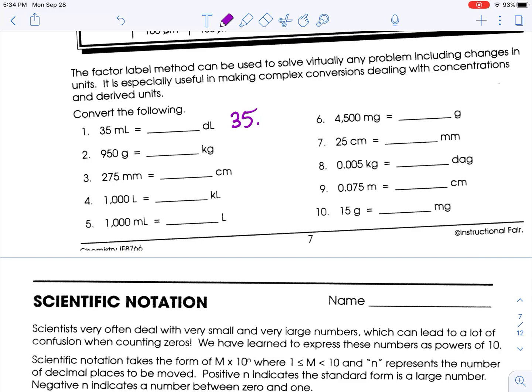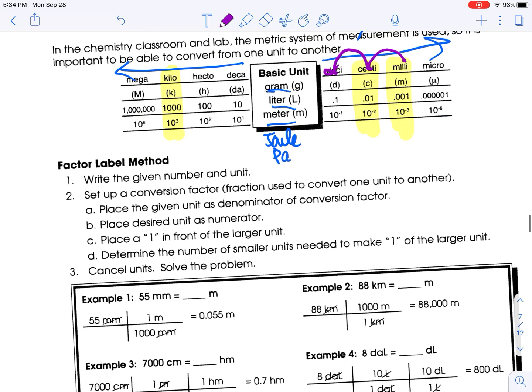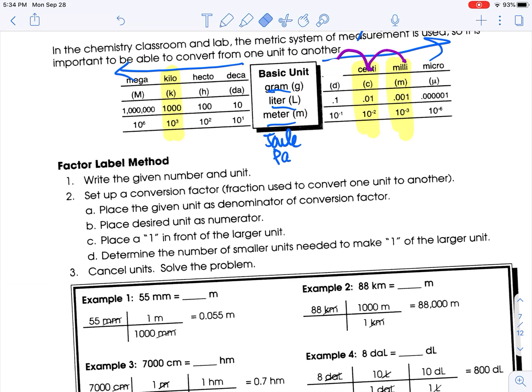So where's my decimal place? It's here. One, two. So 0.35 is our answer. It's easy doing it this way, and you've got this chart.